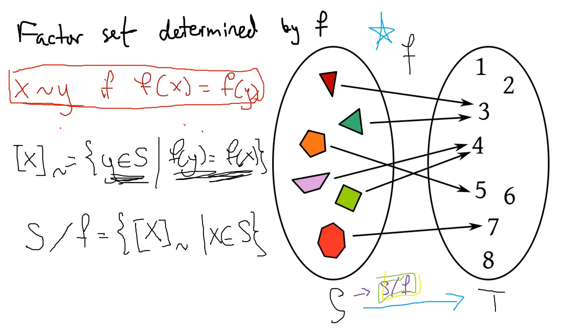So for example, this triangle up here, this top one is mapped to three, but also this other triangle right down here is mapped to three. So these become the same thing in the factor set.